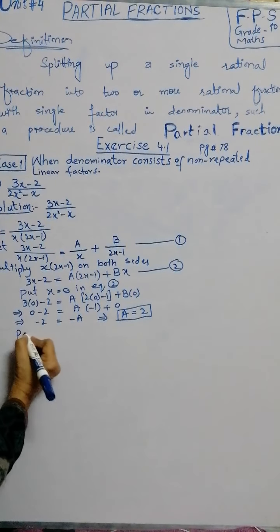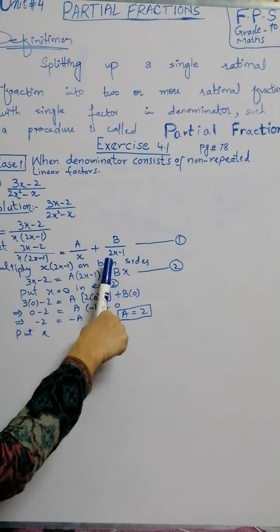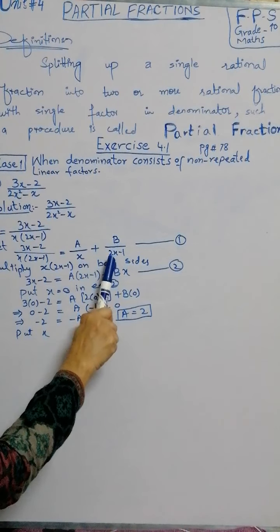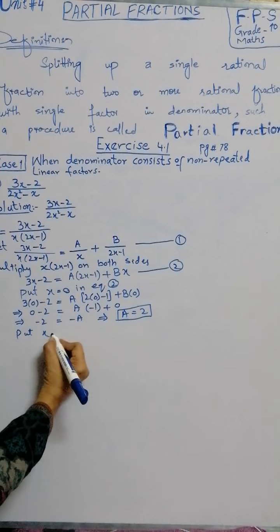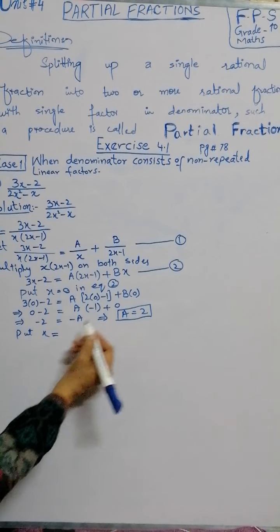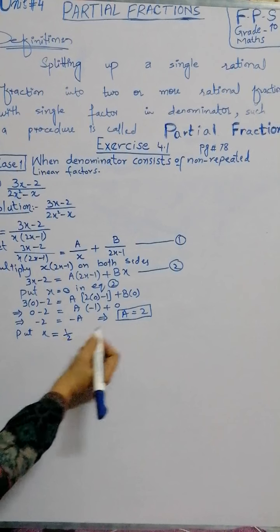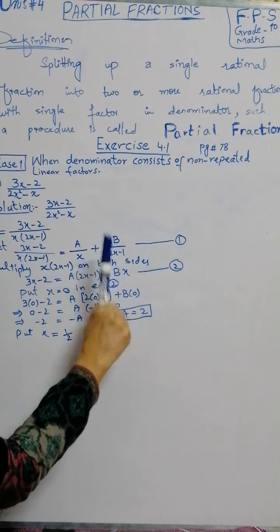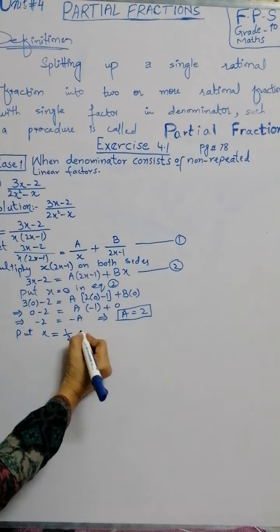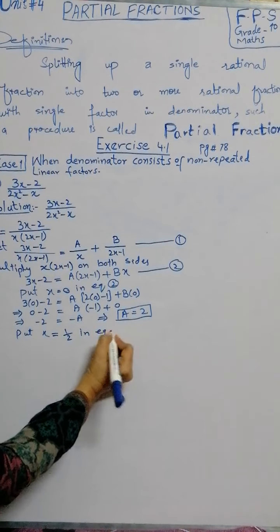Now, for fraction B by 2x minus 1, the denominator is 2x minus 1. From this we get the value of x equals 1 by 2. How is it 1 by 2? 2x minus 1 equals 0, so 2x equals 1, and x equals 1 divided by 2. We put this in equation 2.